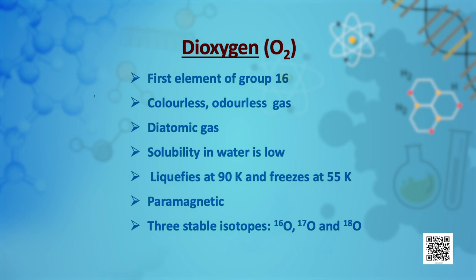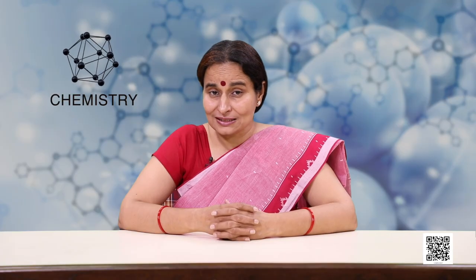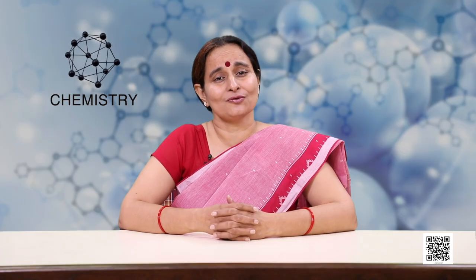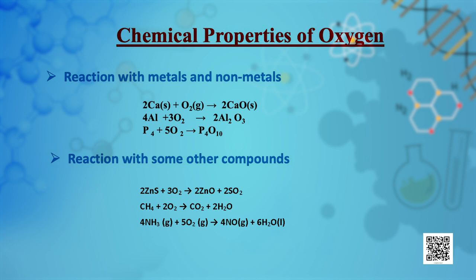Oxygen liquefies at 90 K and freezes at 55 K. It is unique in being paramagnetic in spite of having an even number of electrons. Oxygen has three stable isotopes: oxygen-16, oxygen-17 and oxygen-18. Chemically, it directly reacts with nearly all metals and non-metals, except some metals like gold and platinum and some noble gases.